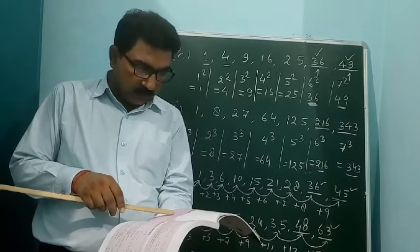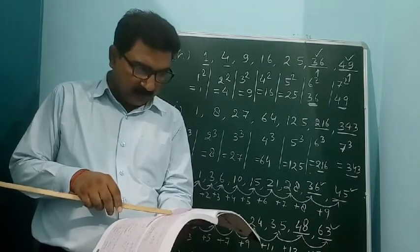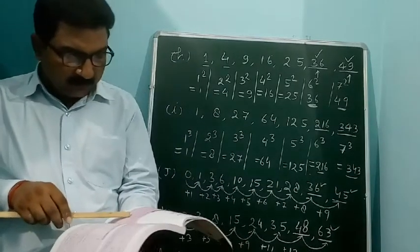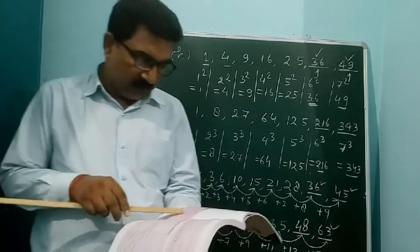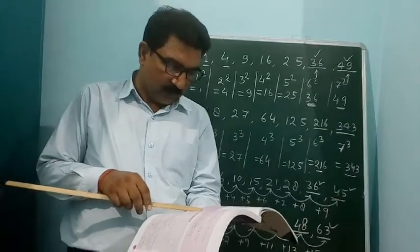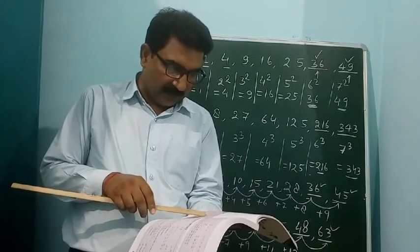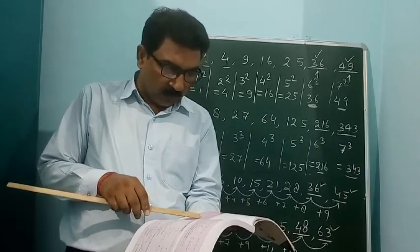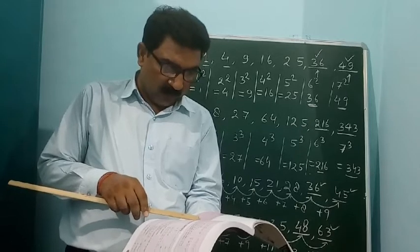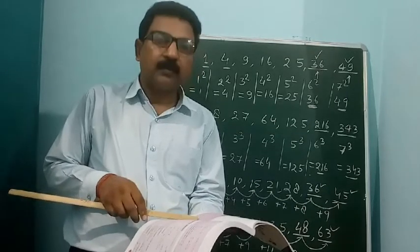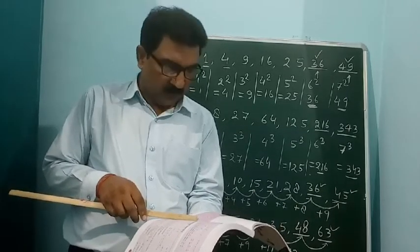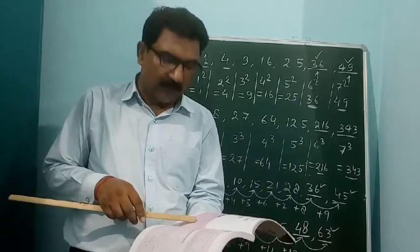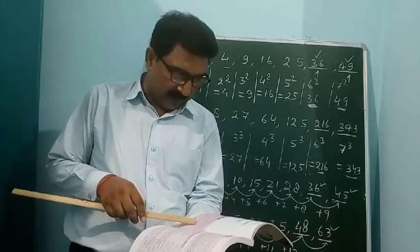Question Q: 90, 81, 72, 63. This pattern is decreasing by 9. So: 90 minus 9 is 81, 81 minus 9 is 72, 72 minus 9 is 63, 63 minus 9 is 54, and 54 minus 9 is 45. So it is followed by decreasing by 9, giving 54 and 45.